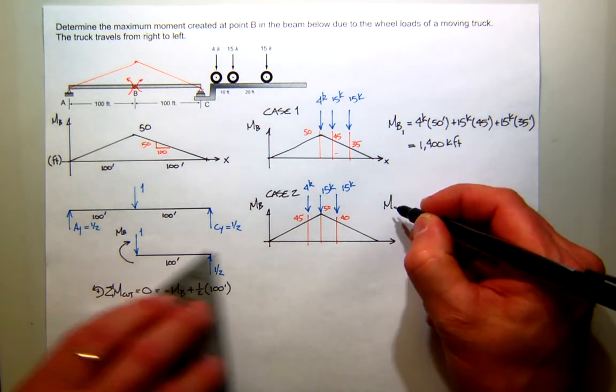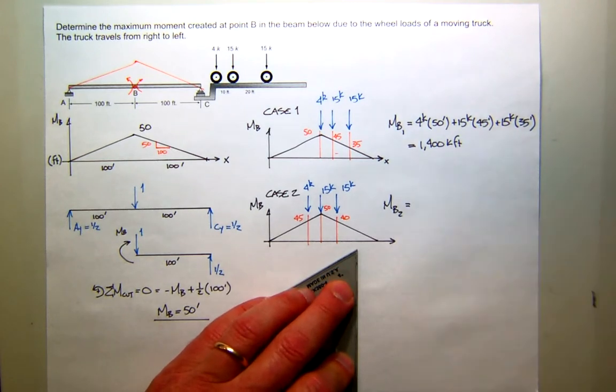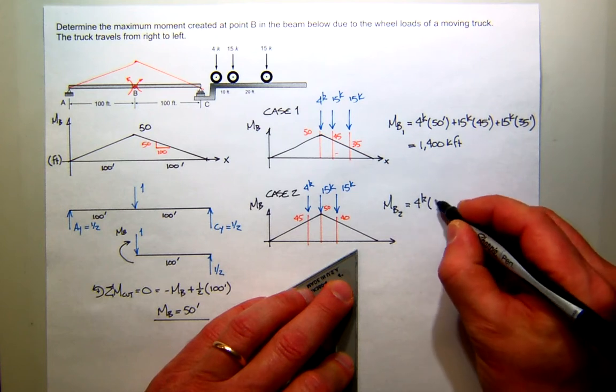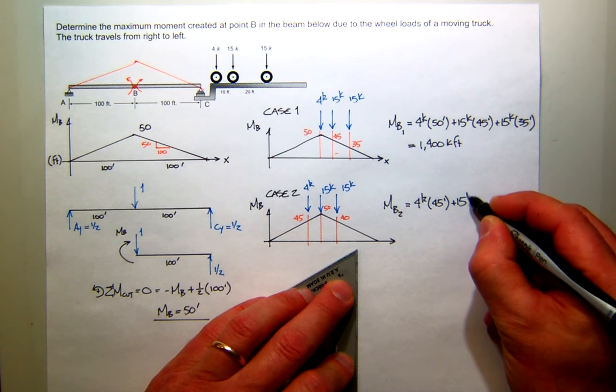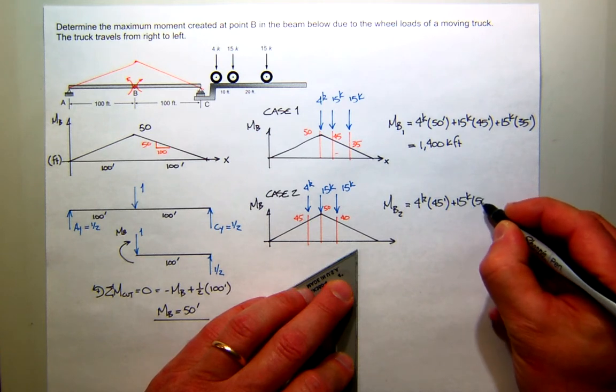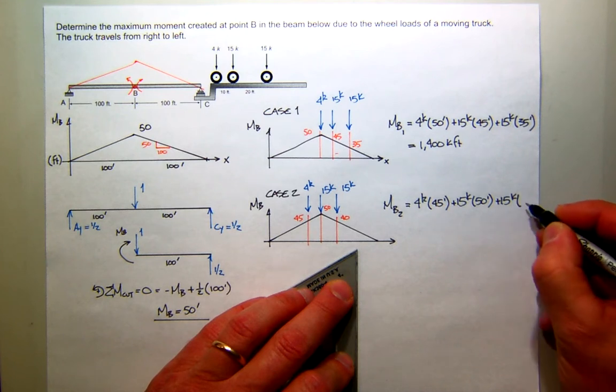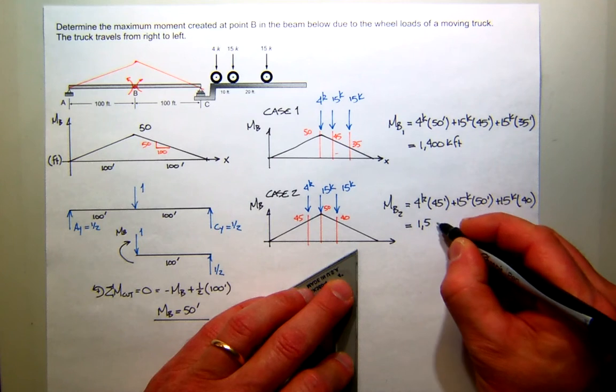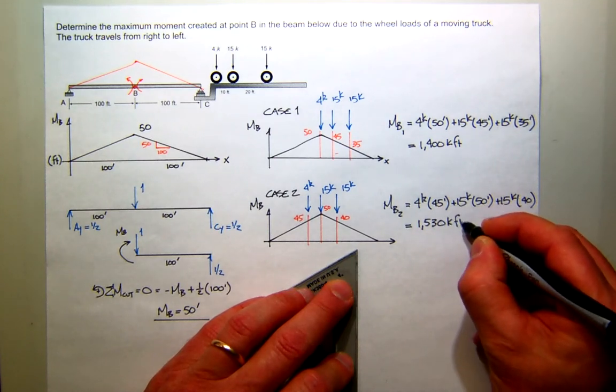What is the moment at B for case 2? Somebody can go ahead and crank up their calculator. It's 4 times 45, 15 kips times 50, plus 15 kips times 40. What's that? 1,530. 1,530? Anybody else have that? Yes. Excellent.